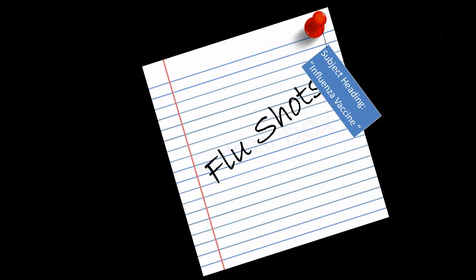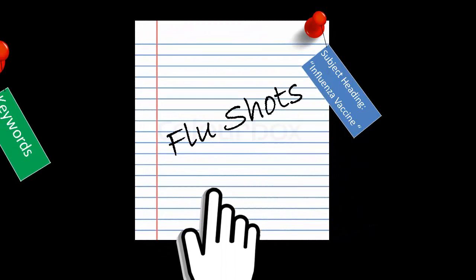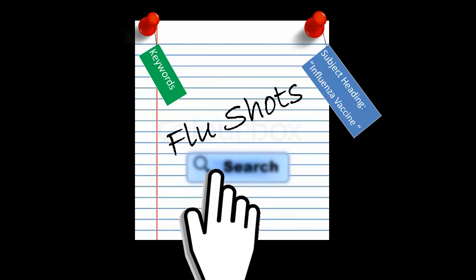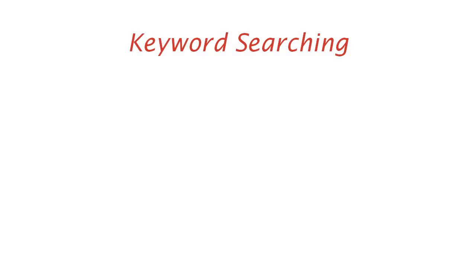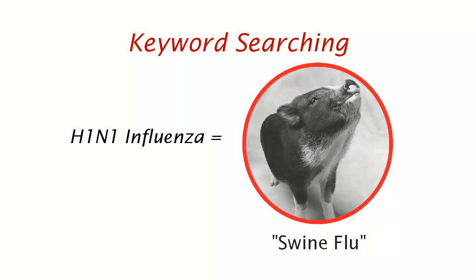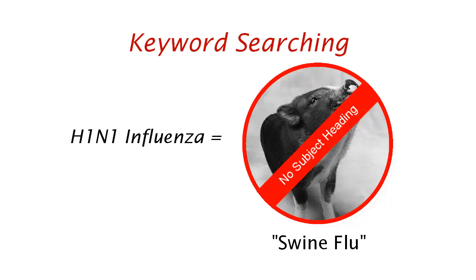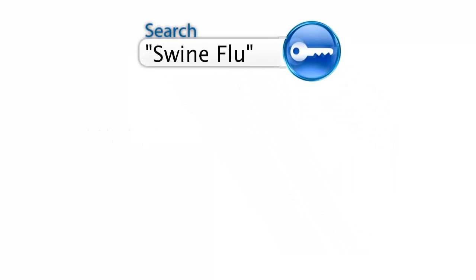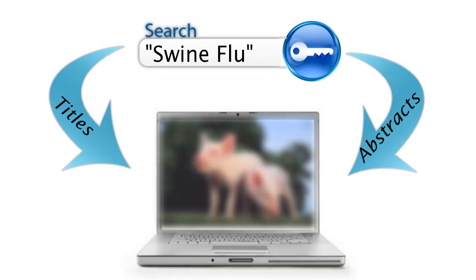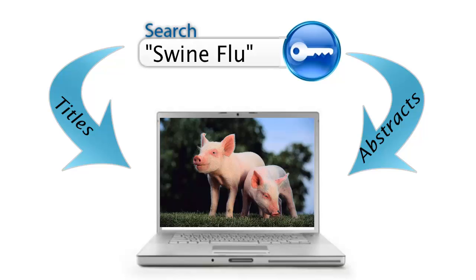Sometimes the concept you are trying to represent may not easily be pinned down by a single subject heading. In these cases, you can supplement your search with keywords, like you'd use in a standard search engine. Keyword searching is best used when trying to broaden your search with synonyms or more colloquial, non-scientific language. For example, imagine we were interested in the H1N1 strain of influenza, commonly called swine flu. Swine flu does not exist as a subject heading, but we can imagine an author using this terminology, and we want to be sure that such articles are included in our results. Searching for 'swine flu' as a keyword will look at the titles and abstracts of the articles, and return any of those in which the exact term is used, thus expanding our result set.